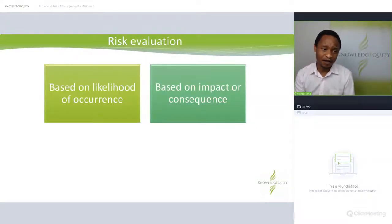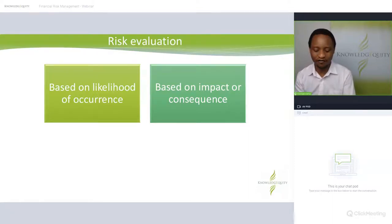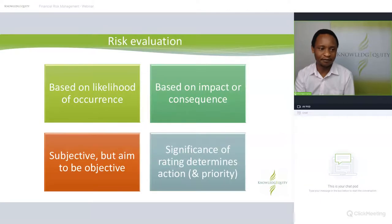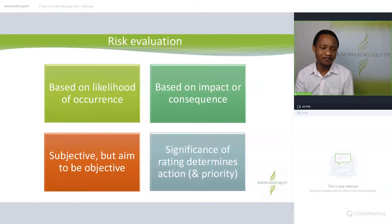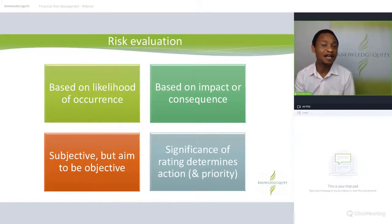In risk evaluation, we assess based on likelihood of occurrence and also look at impact or consequence. We ask: how likely is this risk to occur, and if it occurs, what is the consequence? We bring those two together to rate that risk. It can be quite subjective, and the significance of the rating determines the action or priority. For example, if a risk is rated 'extreme,' you need to put controls in place to mitigate it.